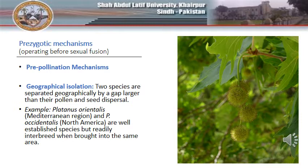Platanus orientalis, the Old World sycamore, is well established in the Mediterranean region. On the other hand, a very similar species, Platanus occidentalis, commonly called the American sycamore, is distributed across North America. A geographical barrier keeps these species intact, but they can interbreed when brought together.